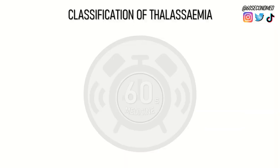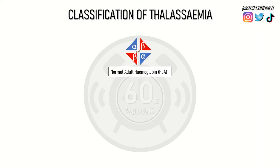Thalassemia is an inherited disorder of hemoglobin synthesis. For the classification of thalassemia, it is important to remember that normal adult hemoglobin is made up of two alpha globin chains, two beta globin chains, and a heme group.